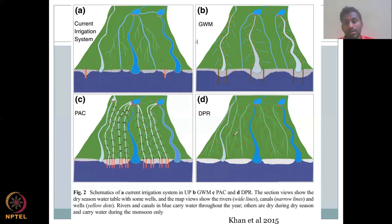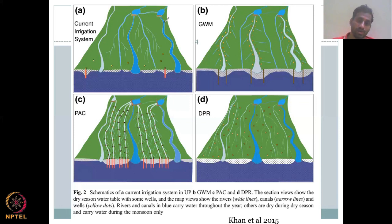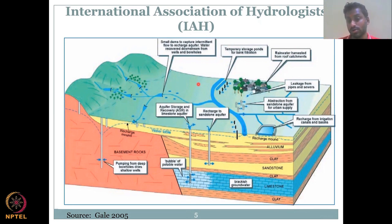You cannot suddenly stop people from using groundwater because they have been using it and see the benefits. But the depletion is now too much to continue as is, so some difference in attitudes is needed. As the IH has said, you have to use multiple assets to manage surface and groundwater recharge structures and surface storage structures using engineered schemes — not just one method.